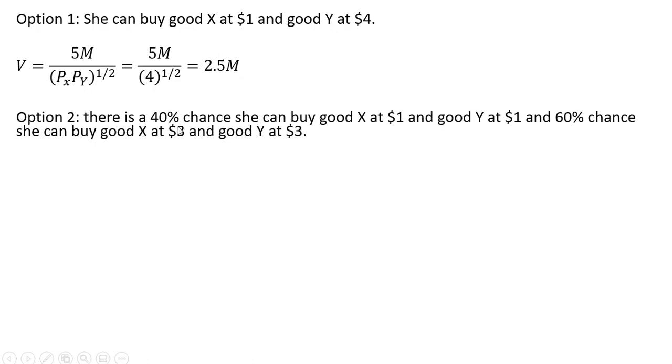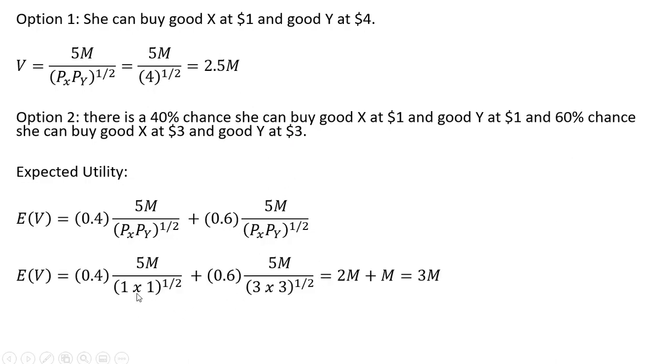Option two will create our expected utility. There's a 40% chance that the price of Good X is $1 and the price of Good Y is $1, and we'll make our substitutions into the formula for that. Then there's a 60% chance that the price of Good X is $3 and the price of Good Y is $3. If we make our substitutions for the prices and simplify, this will simplify down to 3M.